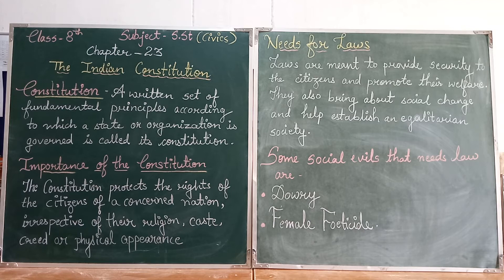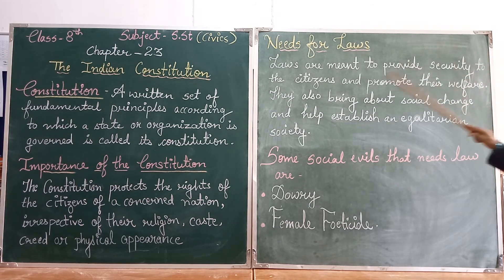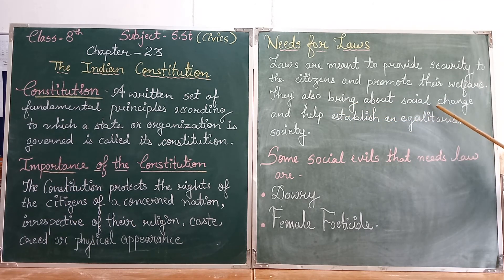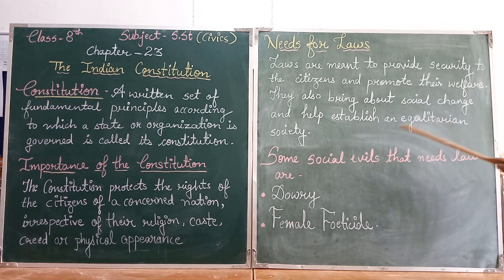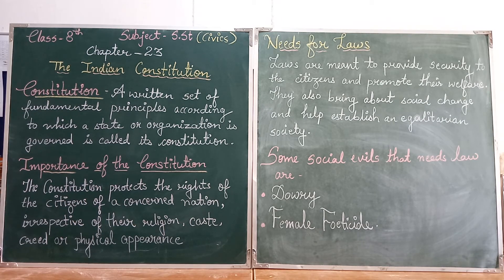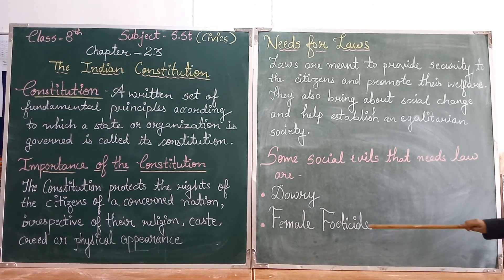Now we will discuss the need for laws. Laws are means to protect the security of citizens and promote their welfare. These laws are helpful to bring out social changes and help to establish an egalitarian society. There are some evils in our society which need laws. Number 1, dowry system — it means dahej pratha. Number 2, female foeticide — it means bhrun hatya.